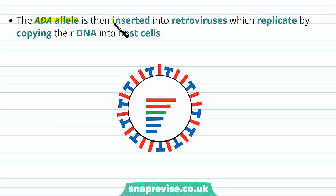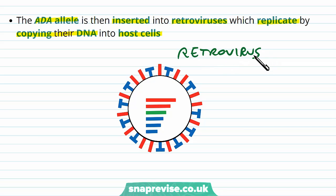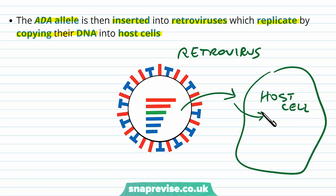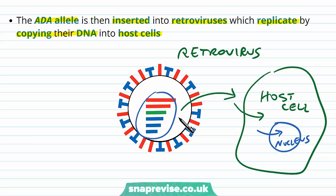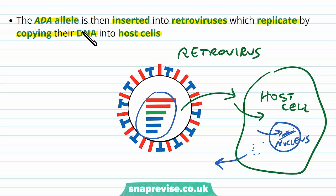The ADA allele is then inserted into retroviruses. Retroviruses replicate by copying their DNA into the host cells. A retrovirus is a type of virus that enters a host cell, enters its nucleus, and puts its genetic material into our own genetic material so that our own cells can make more retroviruses. They replicate, burst out of the cell, and spread around the body. So any DNA found in the retrovirus will be put into the nucleus of the host cell — meaning the healthy ADA allele will be incorporated into our own DNA.